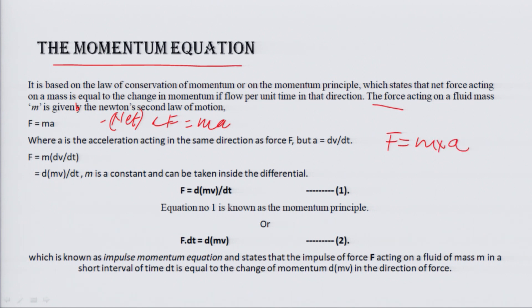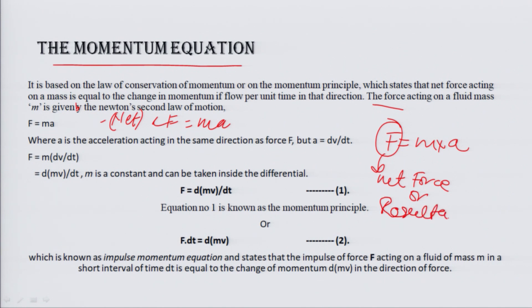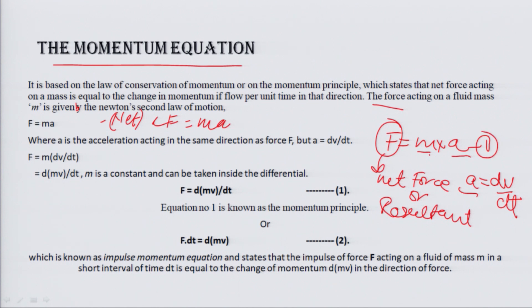Acceleration can be written as dV/dt. Substituting this value into the equation, we get F is equal to m·dV/dt.